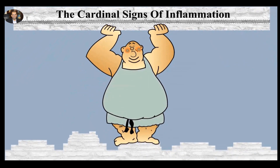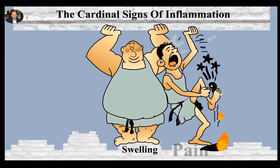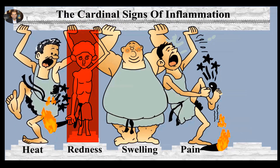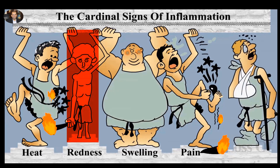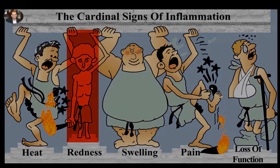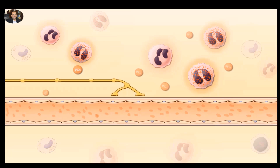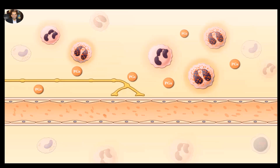There are five cardinal signs of inflammation: swelling, pain, redness, heat, and loss of function. Now we will see how eicosanoids, especially prostaglandins and leukotrienes, mediate these inflammatory signs.